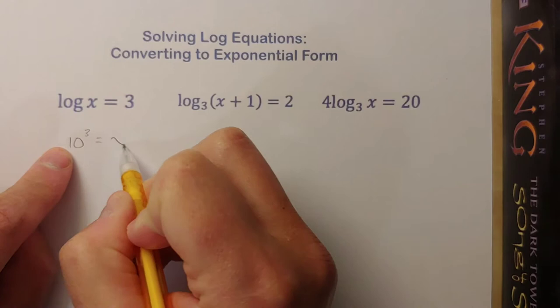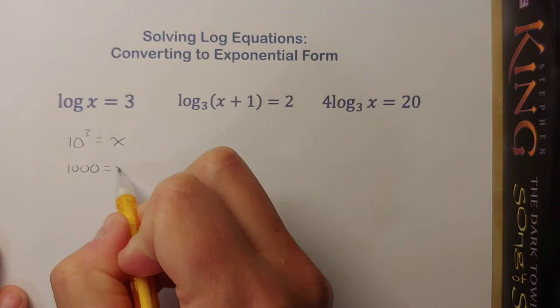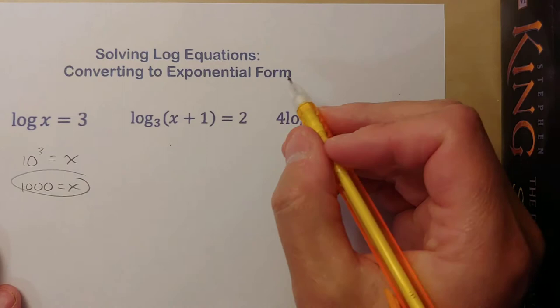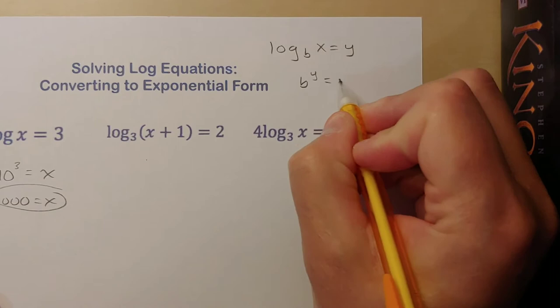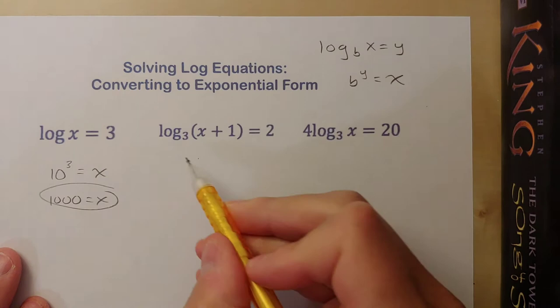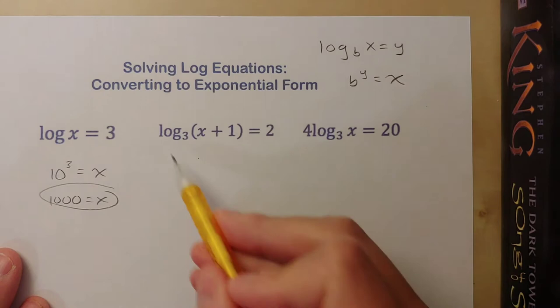So remember that when converting from log form to exponential form, if I have log base b of x equals y, that can be rewritten as b to the y equals x. This is what I'm using to convert these. Second example: I have log base 3 of (x+1) equals 2. Let's convert this to exponential form: 3 to the second power.